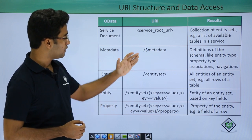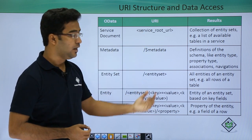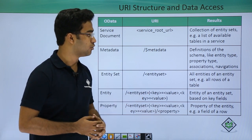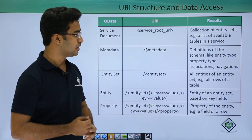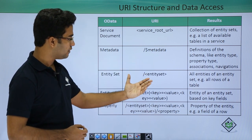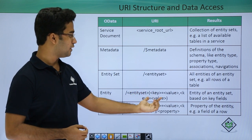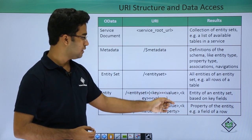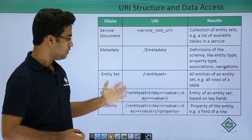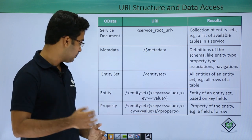We have the entity set — after the URL we provide a slash and then the entity set name. In our case we have used the product entity set, which returns all entries of the entity set, like all rows of a table. Within the entity set we have particular entities, which consist of key-value pairs. We provide a key equal to a particular value, and similarly another key equal to another value. Then within the entity itself we have properties — for example, within a product entity there is a property like property name.